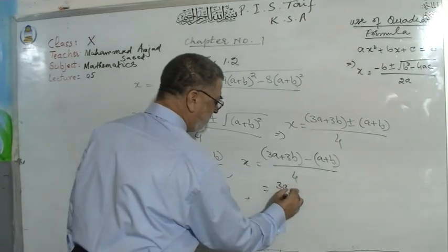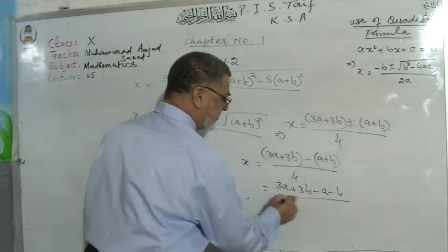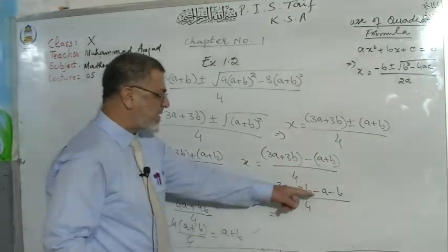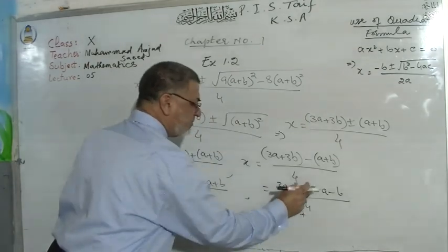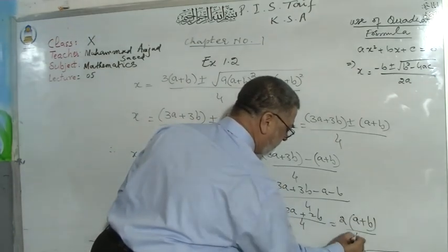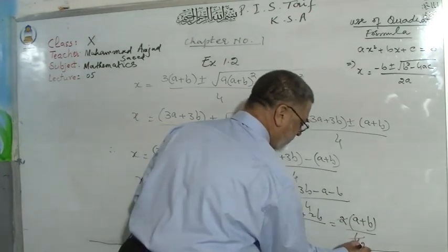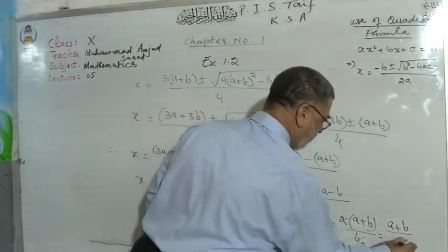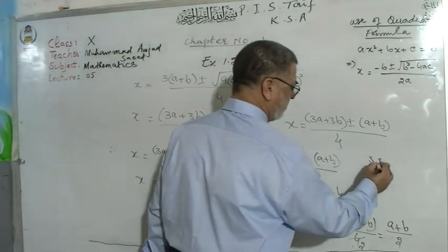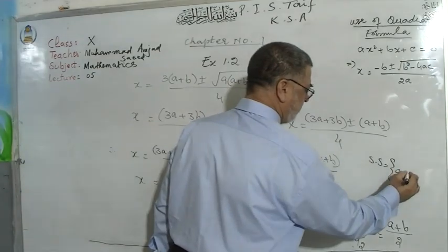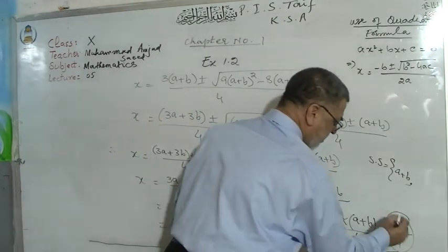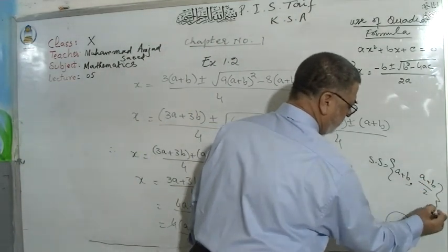For the negative sign: x = (3a+3b − (a+b)) / 4. Opening the bracket with sign change: 3a−a = 2a and 3b−b = 2b, so x = (2a+2b)/4. Taking 2 common: 2(a+b)/4 = (a+b)/2. So the solution set is {a+b, (a+b)/2}.